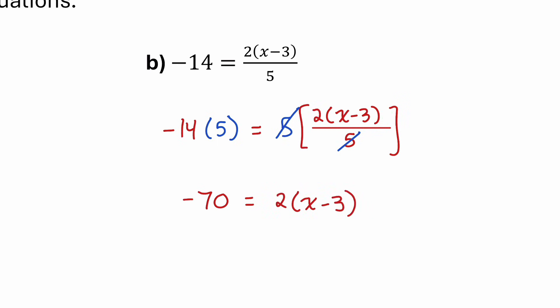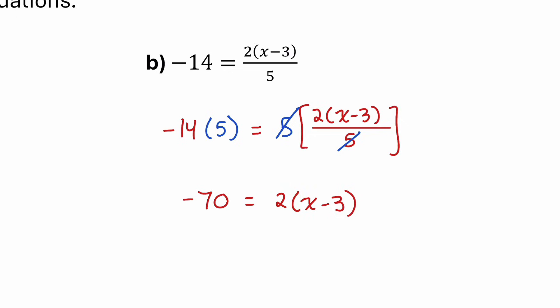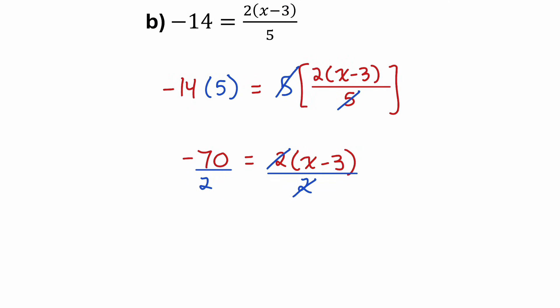When rearranging an equation, we do BEDMAS in reverse, so I would do inside the brackets last. I'll take care of this multiplying by 2 first. To move this 2 away from the x, I'll do the opposite of multiplying by 2, which is dividing by 2. I'll make sure I do that to both sides. On the right, I have 2 divided by 2 — that's 1, so I can cancel those. On the left, I have half of negative 70, which is negative 35.